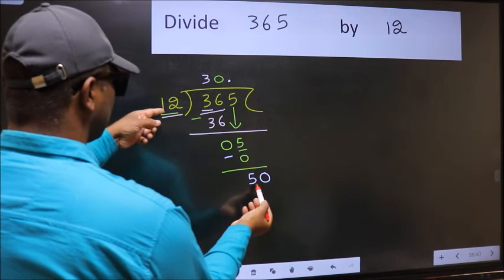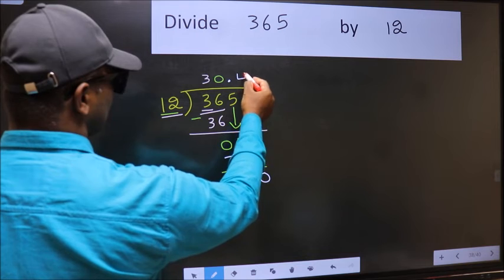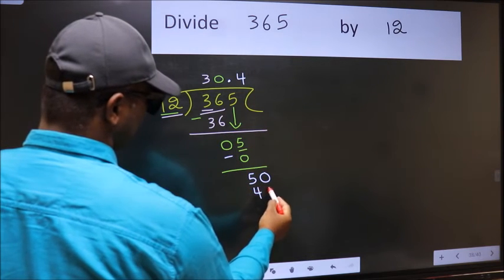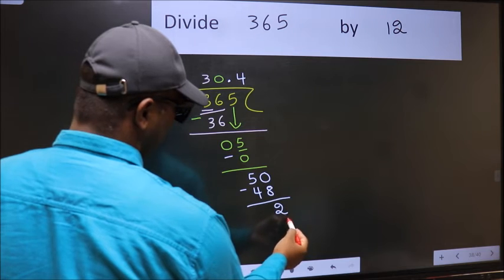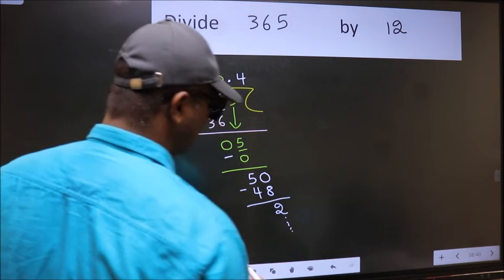A number close to 50 in 12 table is 12 times 4, 48. Now you should subtract. You get 2. And continue the division. I am not doing that.